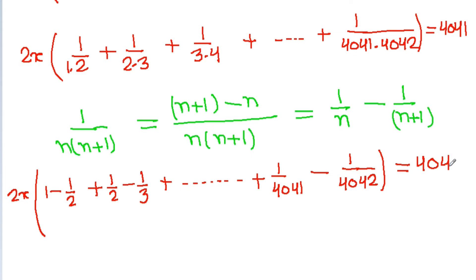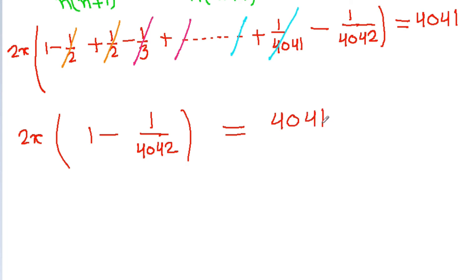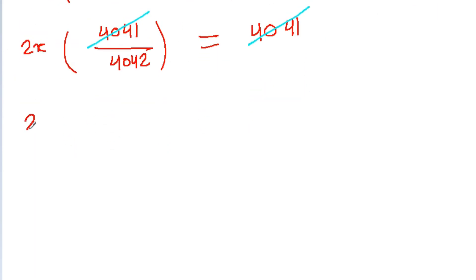Now we can see the telescoping cancellations: minus 1 by 2 cancels with the next term, minus 1 by 3 cancels, and so on. So we get 2x into (1 minus 1 by 4042) is equal to 4041, or 2x times (4041 by 4042) is equal to 4041. The 4041s cancel, giving 2x is equal to 4042.